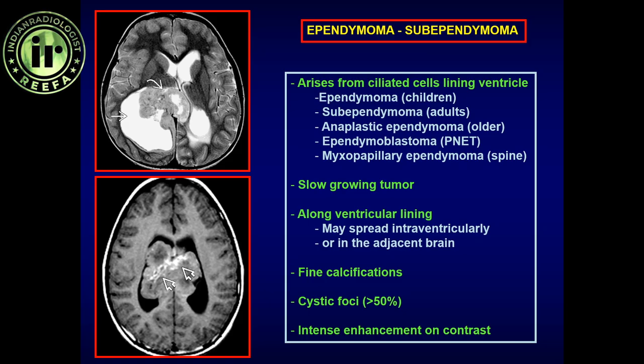The subependymoma is a very slow-growing tumor — almost classified as benign — and is a WHO grade 1 tumor. It very infrequently, if ever, metastasizes. It is subependymal in location, iso- to hypointense on T1, slightly hyperintense on T2, generally solid, and almost never associated with enhancement. Once resected, it is essentially treated.